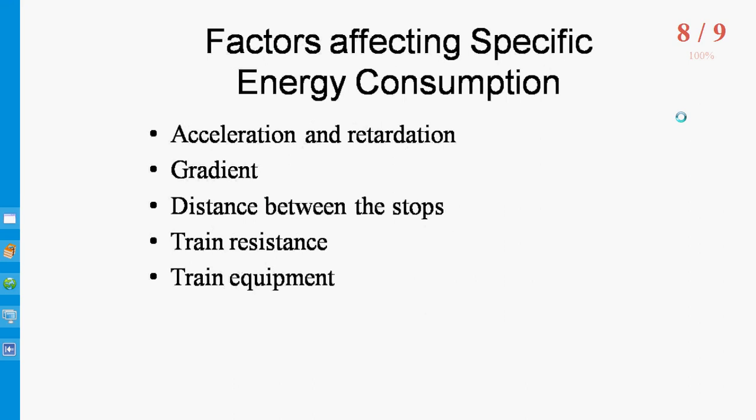Some factors affect the Specific Energy Consumption. First is retardation and acceleration values — for greater values of acceleration and retardation, the specific energy consumption will be less. Next is gradient — a steep gradient causes more specific energy consumption even though regenerative braking is employed. Next is distance between the stops. Next is train resistance — for more train resistance, the specific energy consumption will be more. Last is type of train equipment — greater overall efficiency of axles means specific energy consumption will be less.